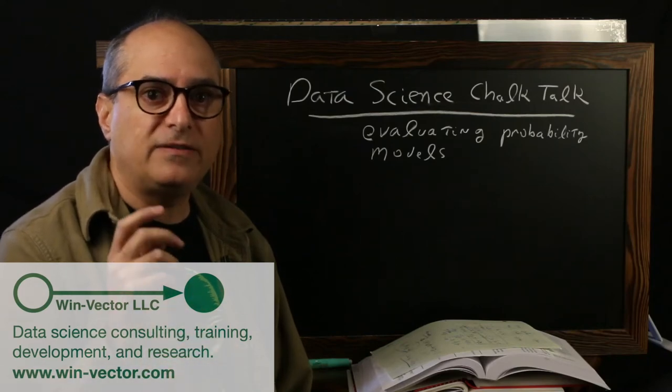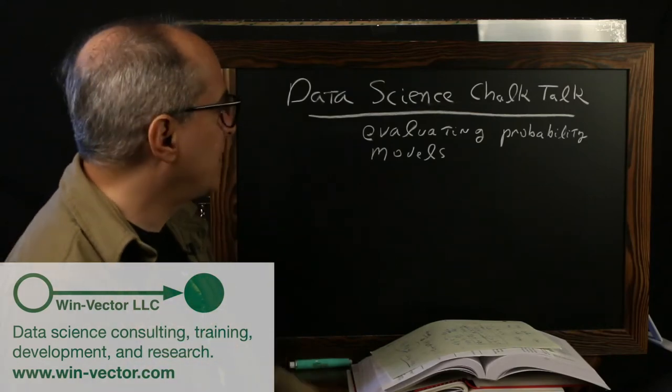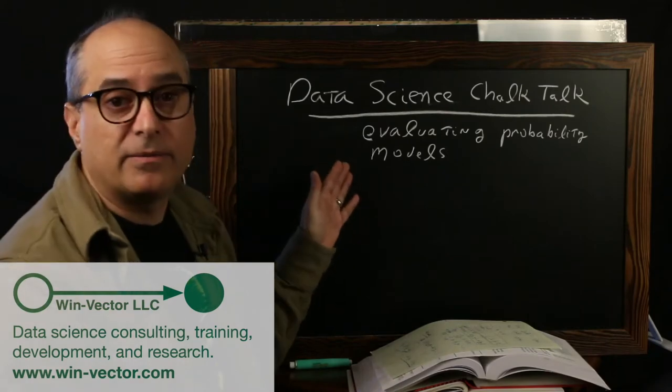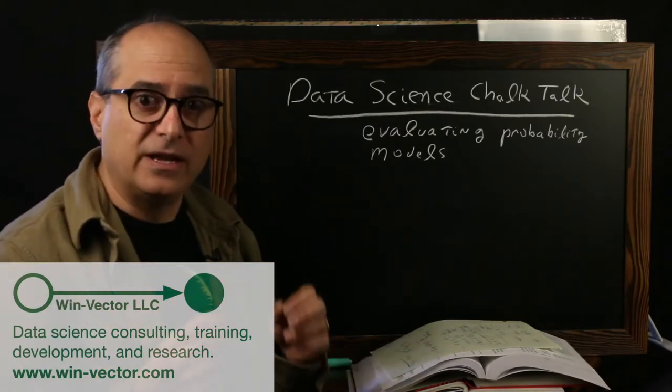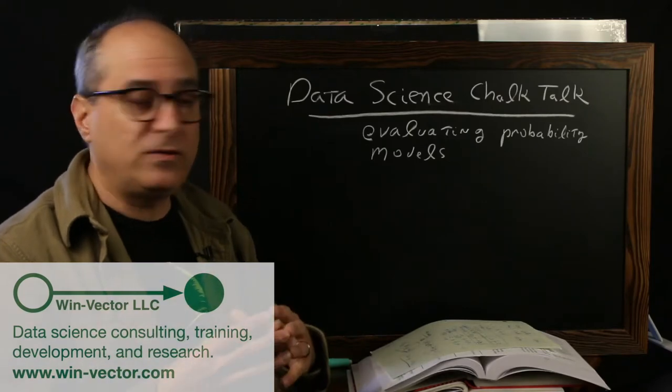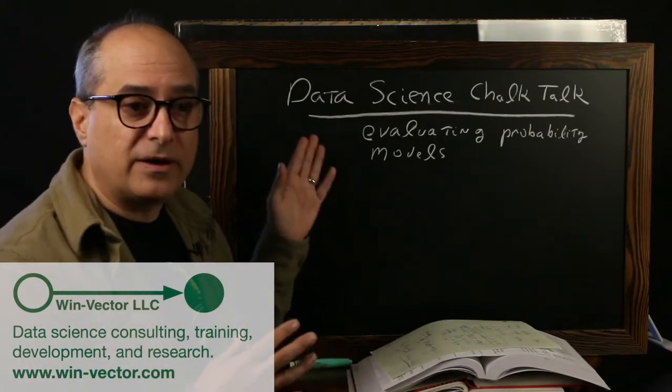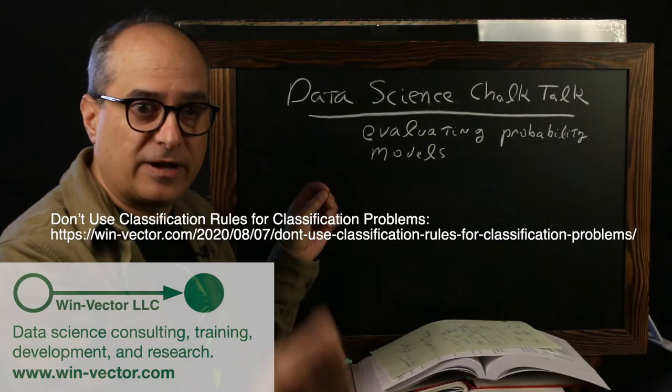Hello. For today's Data Science Chalk Talk, we're going to address the problem of evaluating probability models. This is going to be a sort of opinionated survey to try to orient one into how to evaluate directly models that return probabilities of outcomes happening.